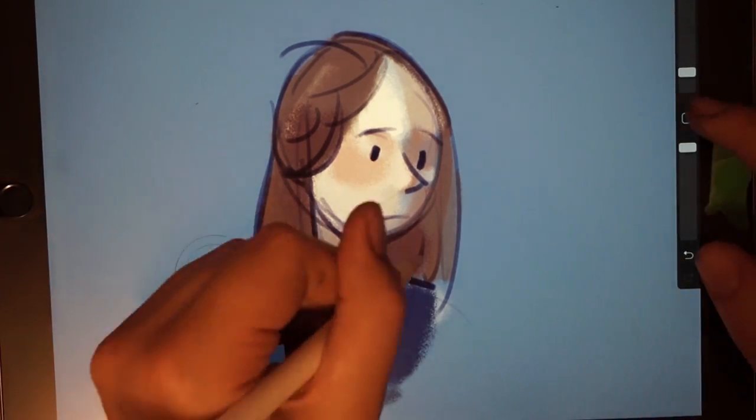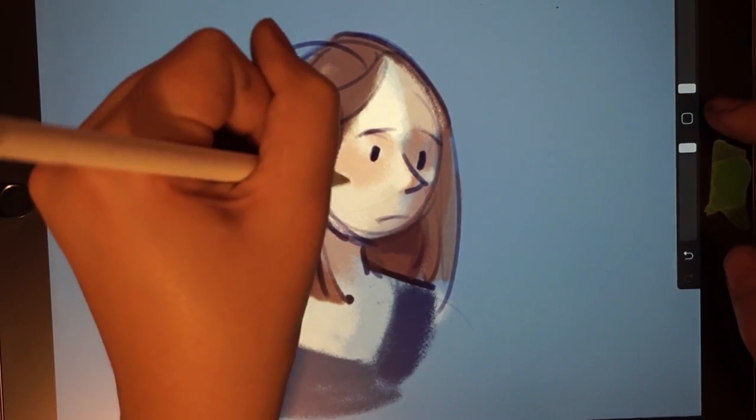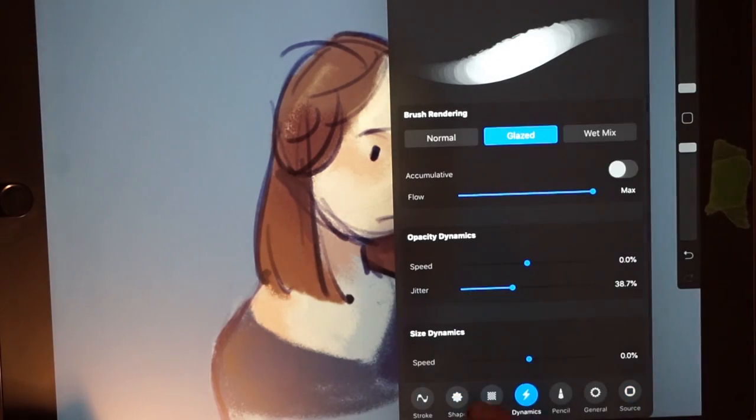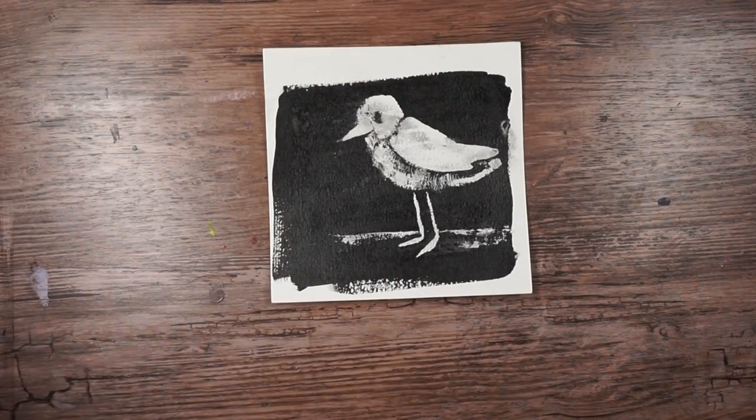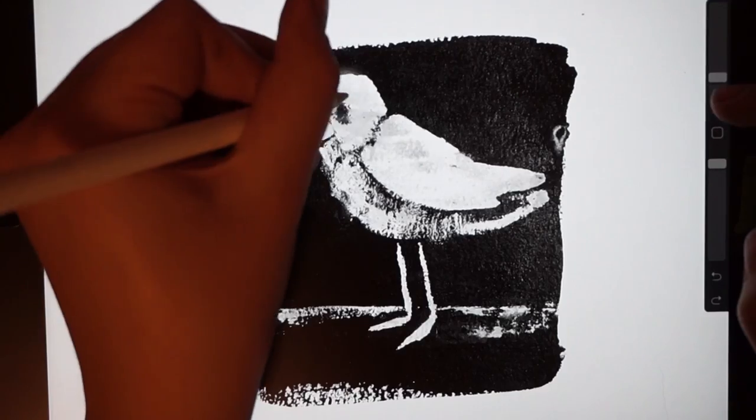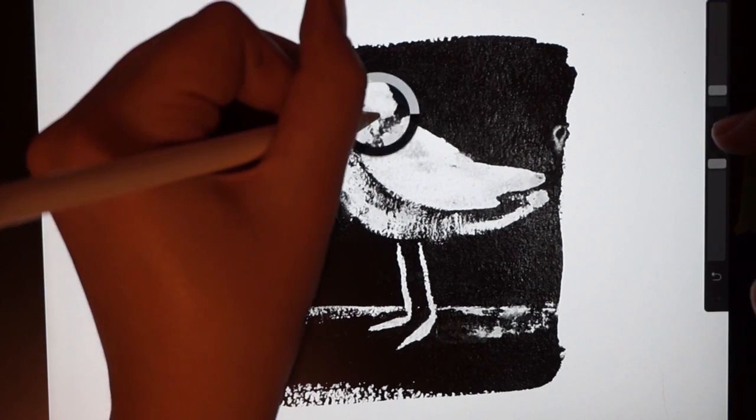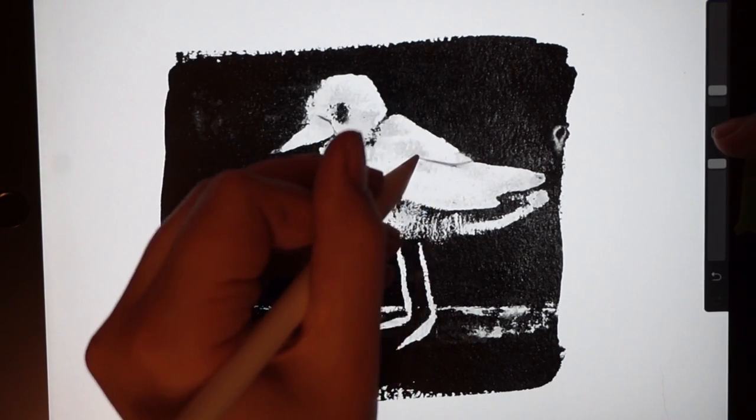Another thing that I haven't really played that much with, except for in this video, is kind of mixing traditional and digital. I see a lot of people do this on Instagram, where they'll take a picture of a sketch they made and color it digitally, and that's a lot of fun to do. You can start digital, print it off, finish it traditionally, vice versa. You can go back and forth.